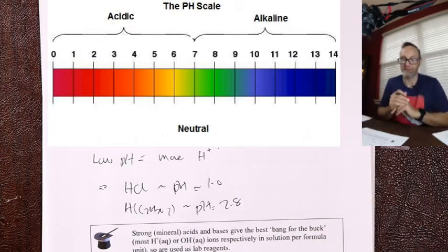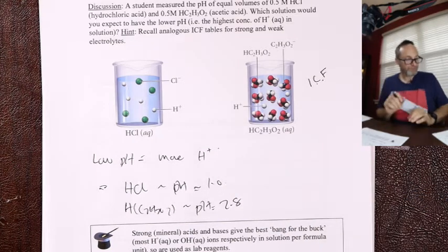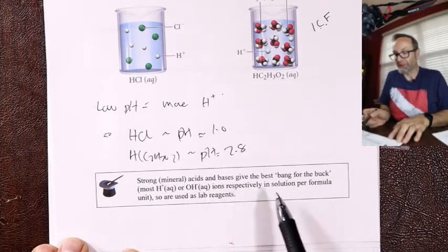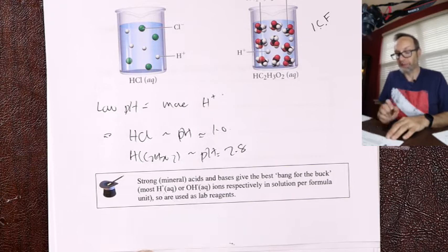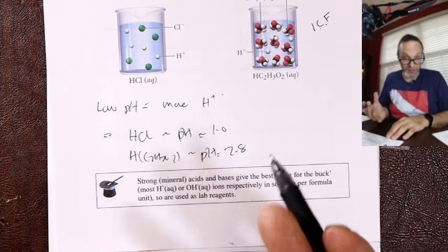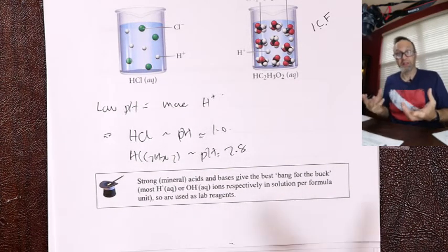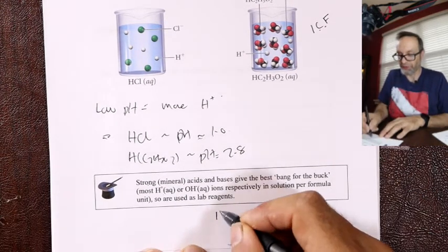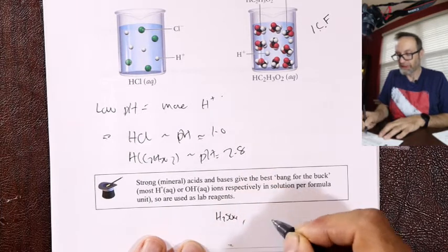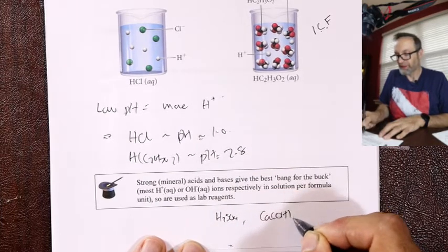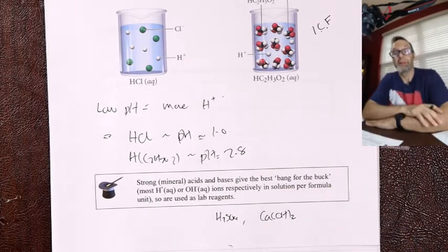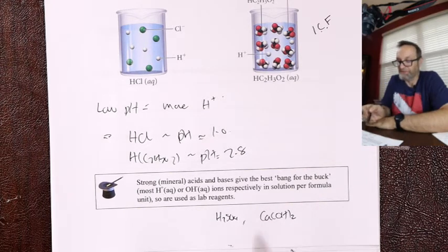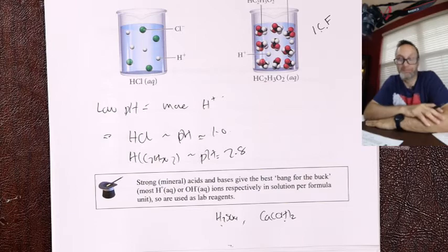The bottom line: strong mineral acids give the best bang for the buck — the most H⁺. Calcium hydroxide is a strong base giving the most OH⁻. H₂SO₄ and Ca(OH)₂ are often used as lab reagents because they're both strong electrolytes, completely dissolve, and have multiple passengers per formula unit.